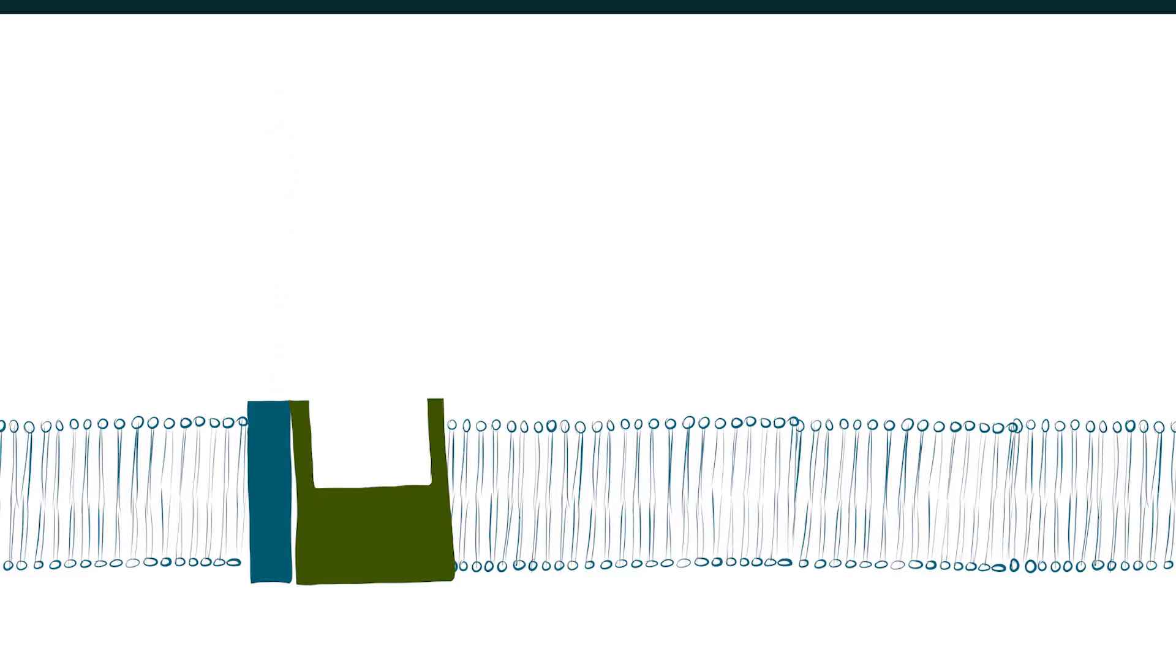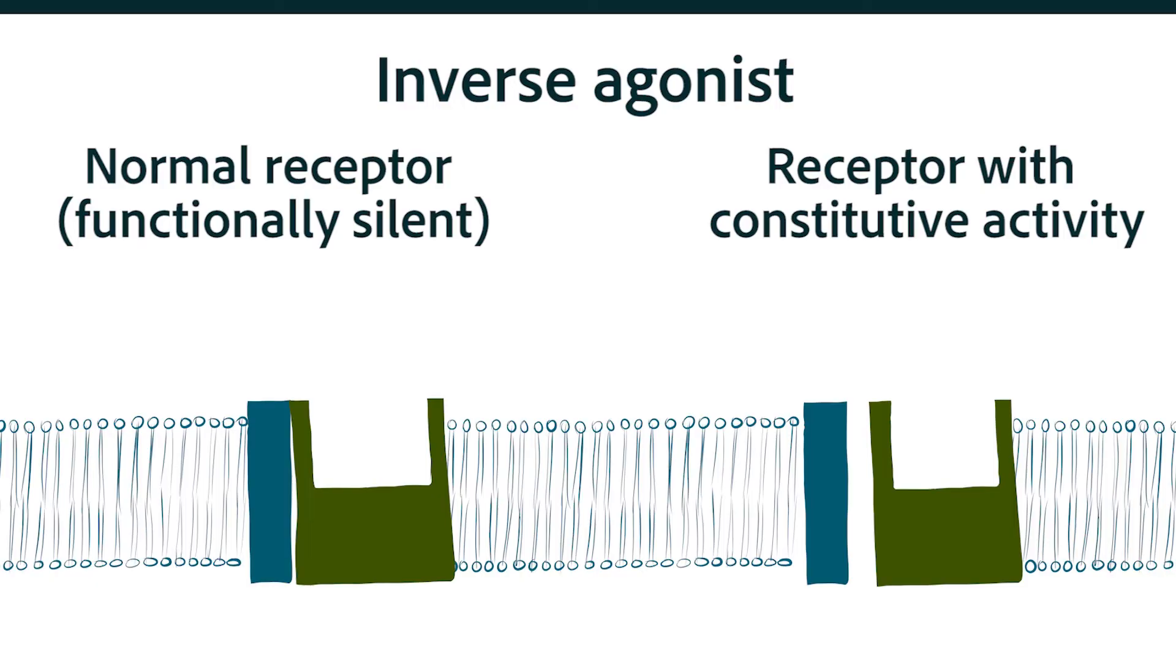But some receptors display what we call constitutive activity. That means there's a little activity that occurs just because the receptor protein is there on the cell surface. This constitutive activity doesn't occur at every receptor protein and doesn't normally occur at this type of receptor. But for simplicity's sake, let's continue using this receptor as the example.